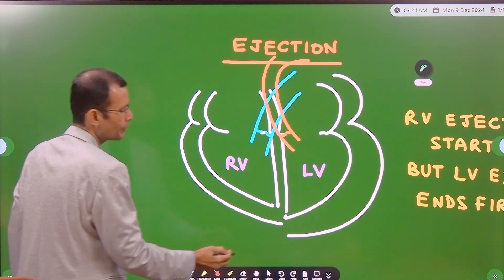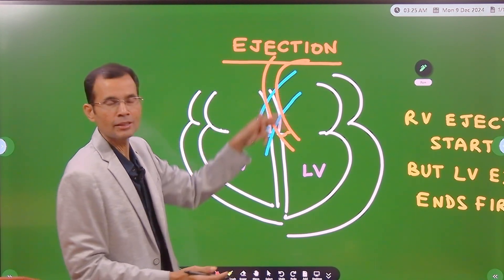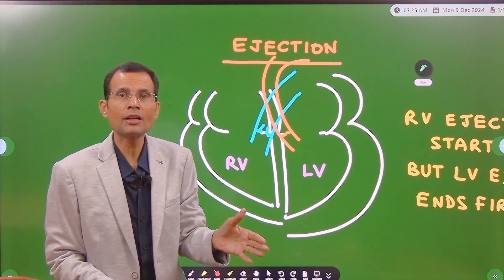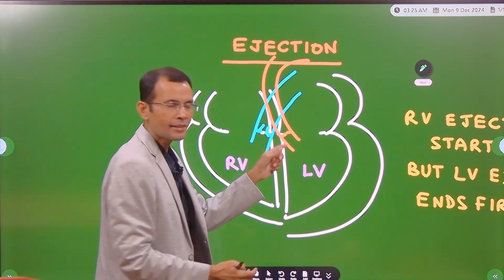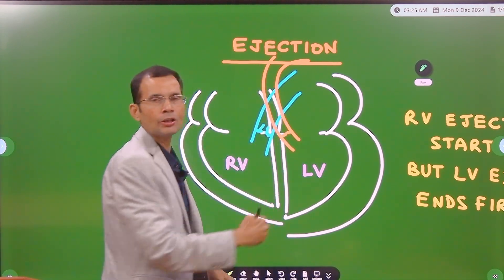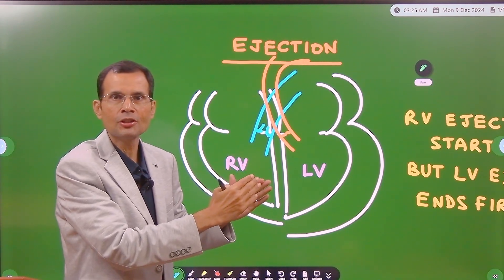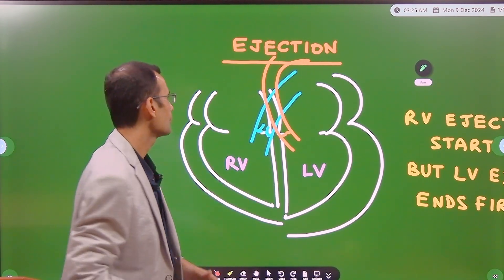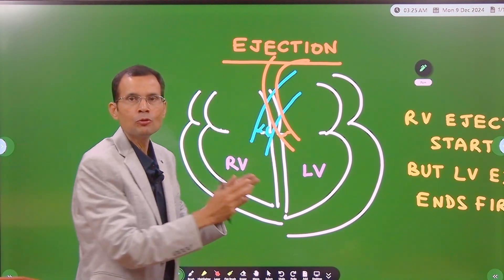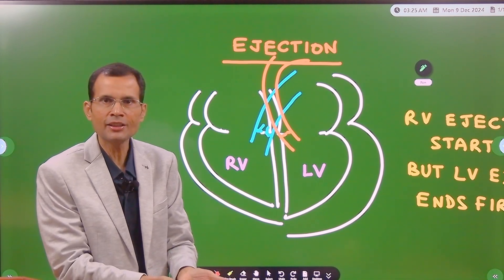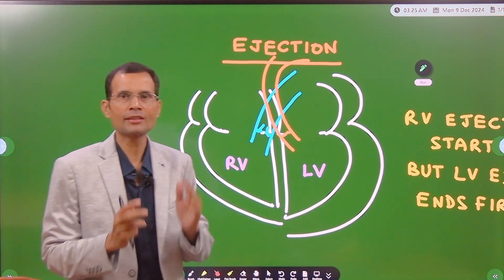Therefore, the pulmonary valve can open freely and easily. You can see here the movement of the valve leaflets as they open — since the pressure in the pulmonary artery beyond the valve is relatively low, this valve opens easily. Whereas for the aortic valve, there is a high pressure of 125 mmHg in the aorta beyond it, so the leaflets are moving against that high pressure and open a little more slowly. Therefore, the pulmonary valve opens first and the aortic valve opens a little later — meaning right ventricular ejection starts first and left ventricular ejection starts a little later.